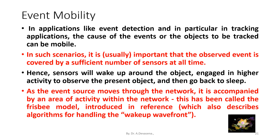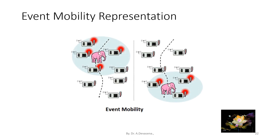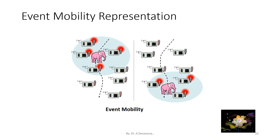The event mobility representation is shown below. In this representation, an elephant is considered to be the tracked object. The movement of the elephant is being tracked by the wireless sensor network, and the path taken by the elephant is being tracked with the help of the sensor network.